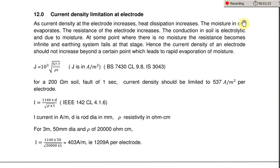We call this as failure of the earthing electrode or the earthing system, and we should prevent this from happening. In order to prevent this failure of the earthing electrode, the current density in a particular electrode should not increase beyond certain levels. This is the formula for this current density.